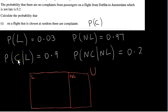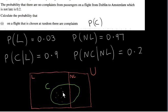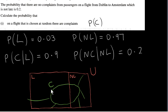Now let's consider the set C — the set of flights where there are complaints. C is obviously a subset of all the flights. Some of these flights with complaints may have been late and some may not have been late, so we need to show the set C intersecting both L and NL. The elements outside of C in the shaded region form the set NC, or C complement. Similarly, NL could be called L complement.